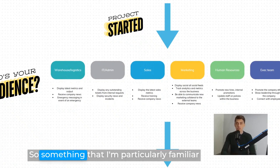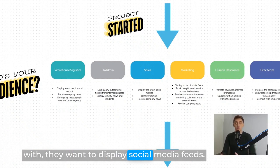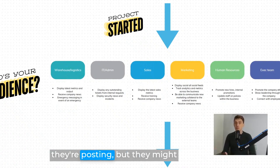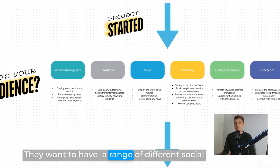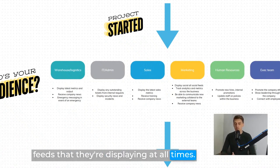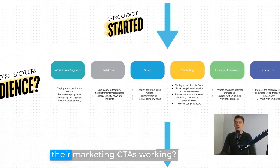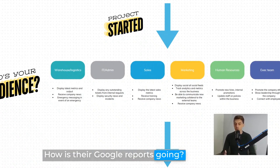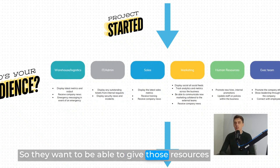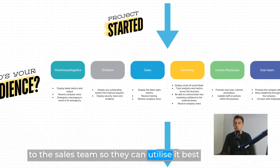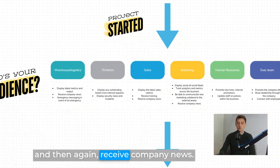Marketing wants to display social media feeds — their own posts, but also competitive feeds, feeds from partners or ongoing relationships. They want a range of social feeds displaying at all times. Analytics and metrics: how are their CTAs working, how is SEO going, how are Google reports performing? They want to be able to communicate new marketing collateral externally, giving those resources to the sales team. And again, receive company news.